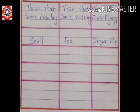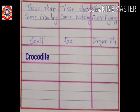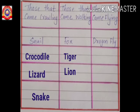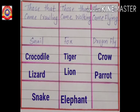Now we have to do an activity. In your textbook on page number 31, a table is given. In this table you have to write down the creatures that move by crawling, by walking, and by flying. Which creatures move by crawling? Yes — crocodile, lizard, snake. By walking? Yes — tiger, lion, elephant. Which creatures move by flying? Yes — crow, parrot, butterfly.